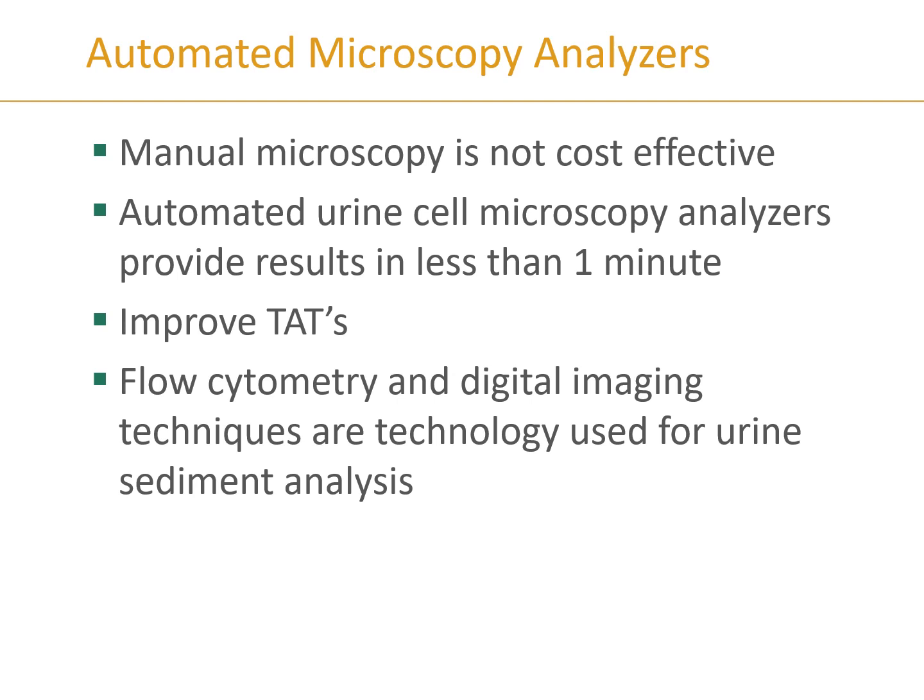Automated urine cell microscopy analyzers can provide results rapidly, usually within a minute or less. In contrast, manual microscopy requires spinning the sample, stopping other tasks, sitting at a microscope, loading the chamber or slide — at minimum a five-minute process. This improvement helps with turnaround time. These analyzers use flow cytometry and digital imaging to capture images of cells, compare them, and place them into proper categories.